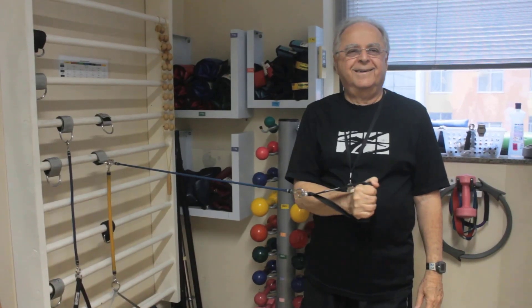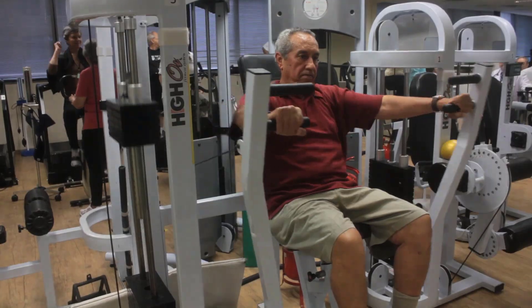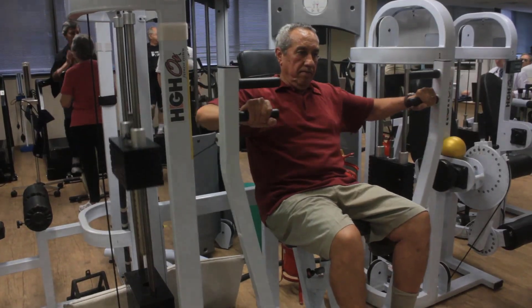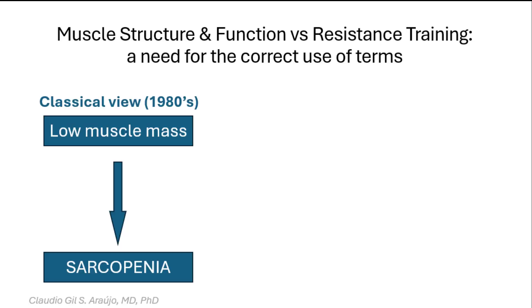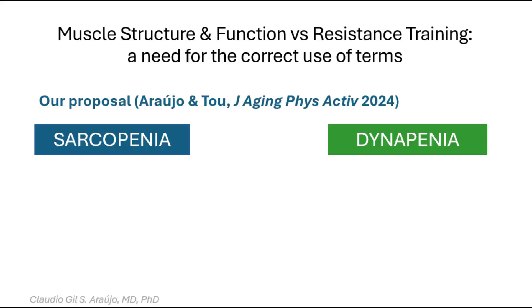Are we aiming to improve muscle mass, strength, or power, or all of them? You are likely familiar with the term sarcopenia. Originally presented as low muscle mass, more recently it has incorporated and even privileged low muscle strength in its definition.